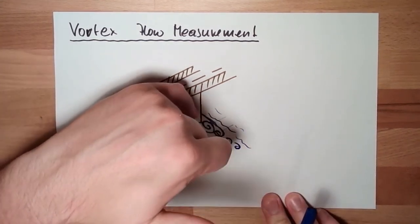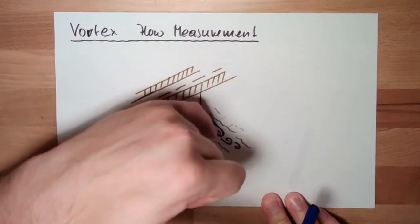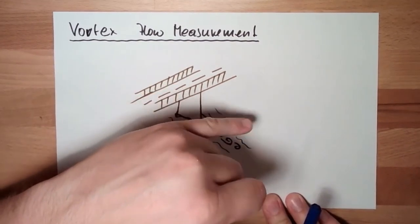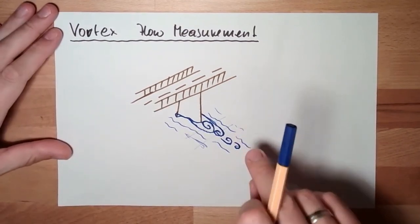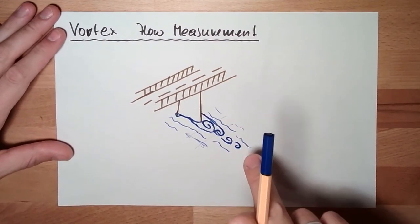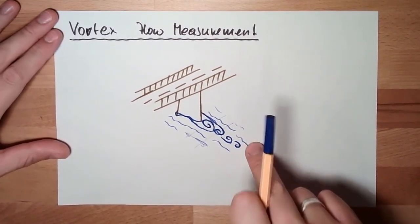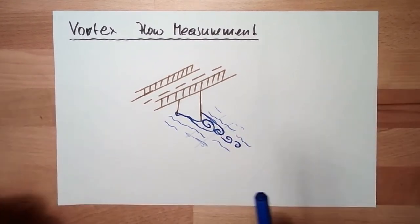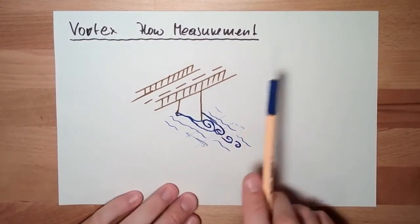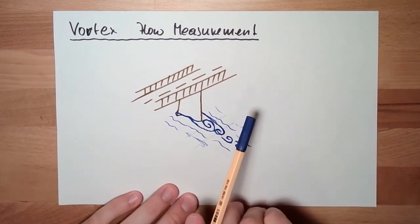Have something inside the flow and measure the frequency of the vortexes which are built. How this is done, there is a video describing this in great detail, also with animation and so on. I will link it for you. You should see it on the top right corner.